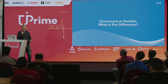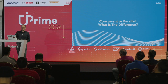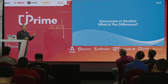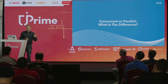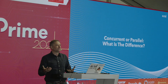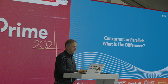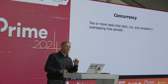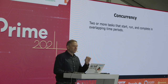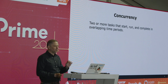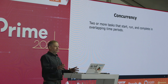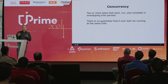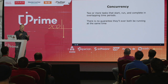Now let's talk about concurrent versus parallel and what the difference is. This actually makes a really good interview question — ask somebody what's the difference between concurrency and parallelism. Concurrency is where we have two or more tasks that start, run, and complete in overlapping time periods. But most importantly, there is no guarantee they will ever be running at the same time.